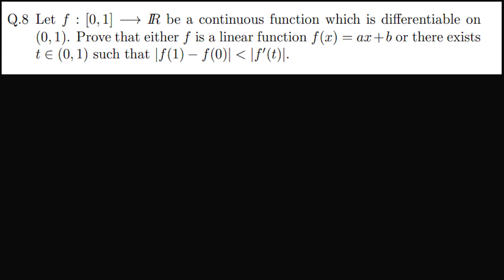Now coming to this last question, we are given a function f which is defined on [0,1] to R, and it is a continuous function which is differentiable on (0,1). Now prove that either f is a linear function, or there exists t in the interval (0,1) such that |f(1) - f(0)| < |f'(t)|.